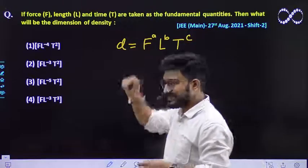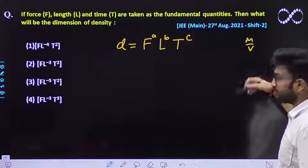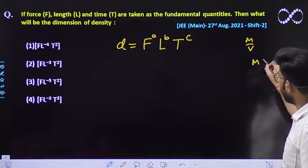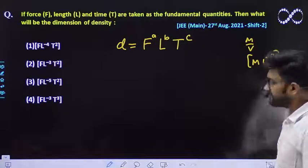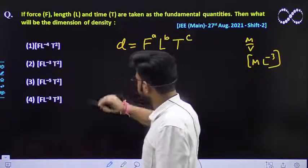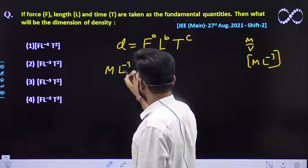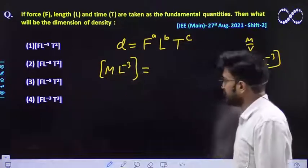And we also know that the density is nothing but mass per unit volume. So what would be its dimension? Dimension would be ML^-3. So this would be the dimension of density. We can easily put it over here. So eventually we will be getting ML^-3. So this is the value of density that we are getting.